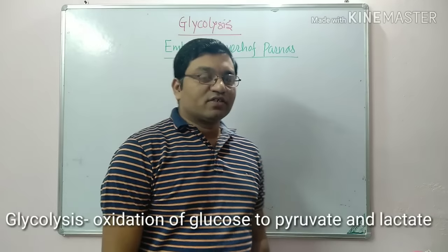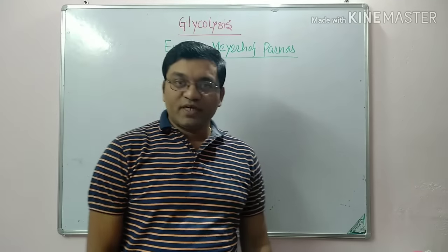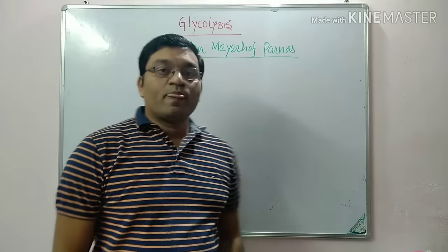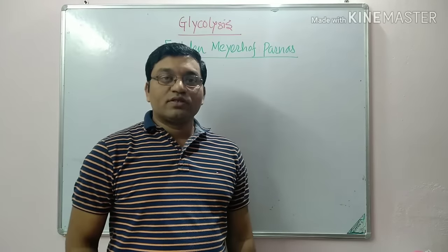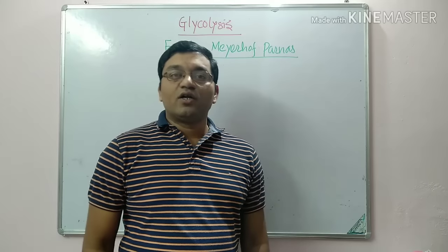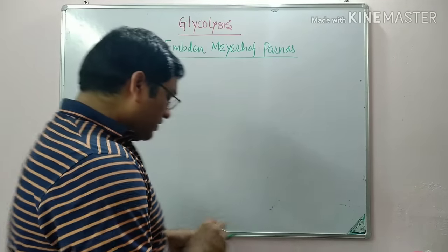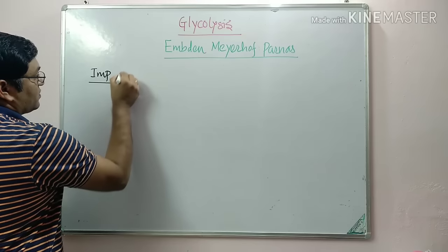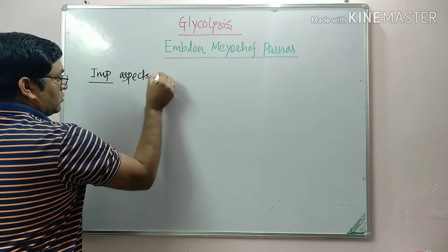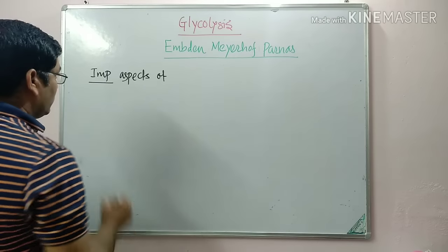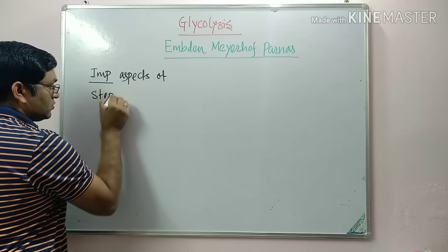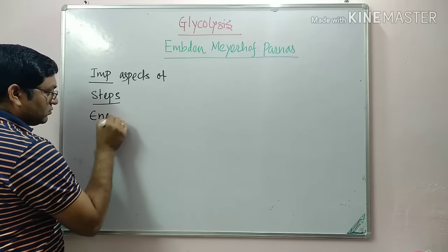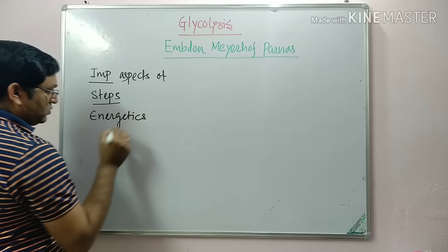Good morning friends. Today we will discuss an important topic in Carbohydrate Metabolism — Glycolysis. The other name for Glycolysis is the Embden-Meyerhof-Parnas Pathway. This is an important pathway because it occurs in both aerobic and anaerobic conditions. We will discuss this pathway under the headings: important aspects of Glycolysis, steps in Glycolysis, Energetics, and Regulation.